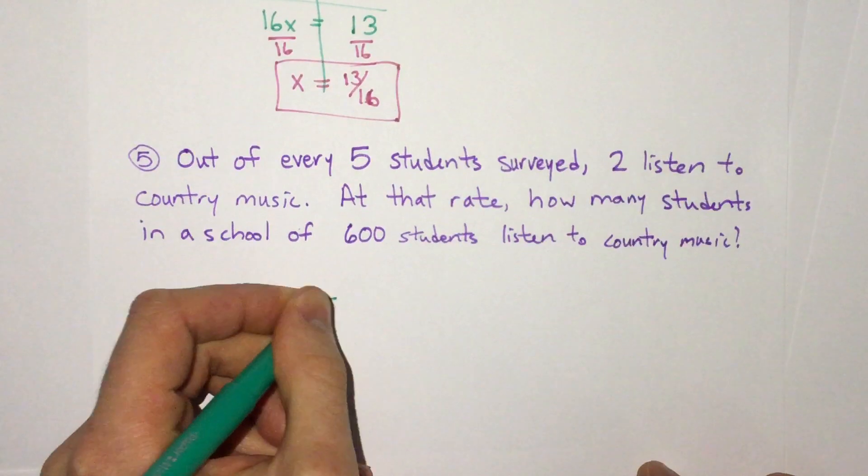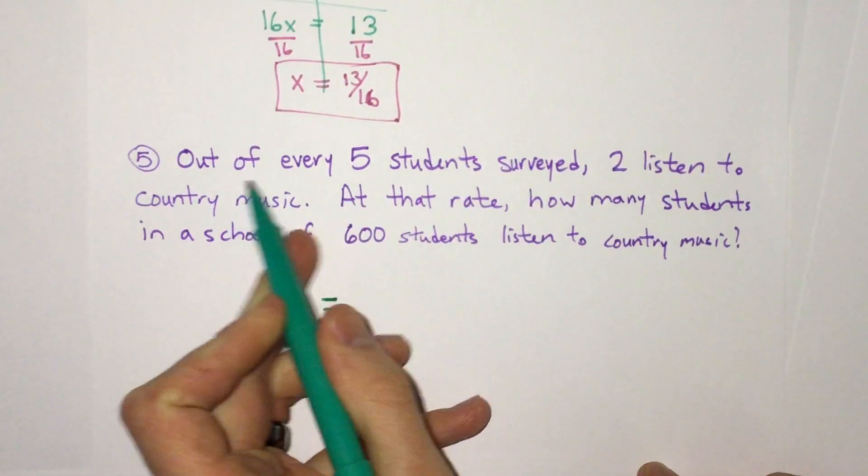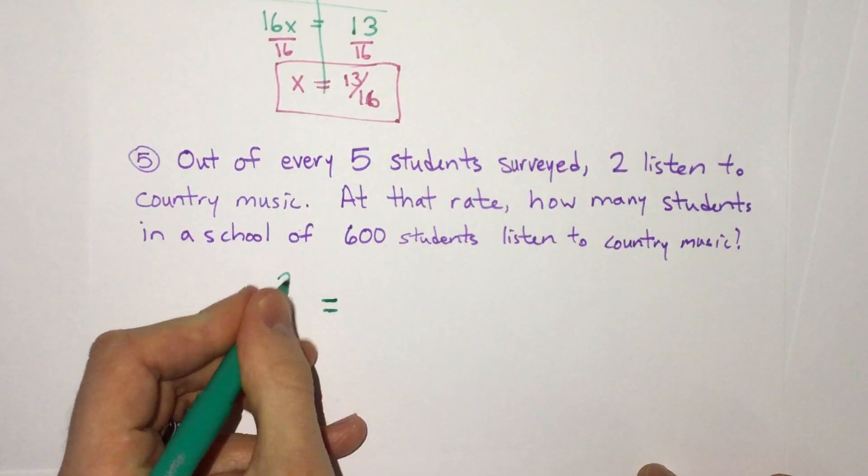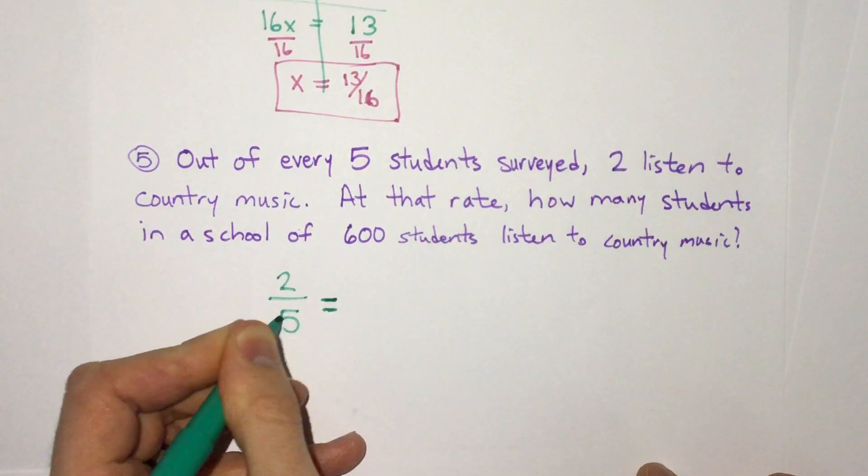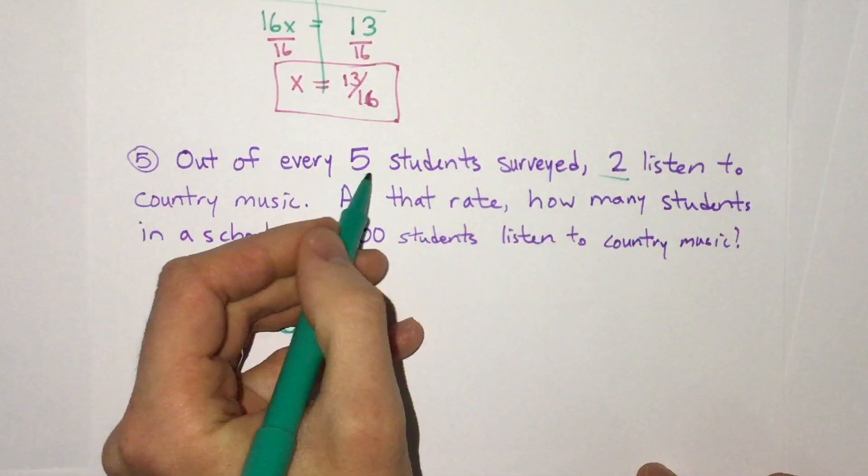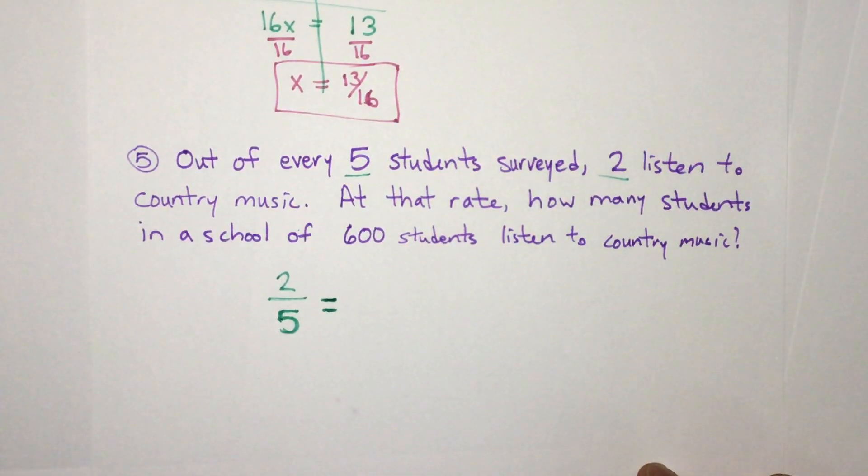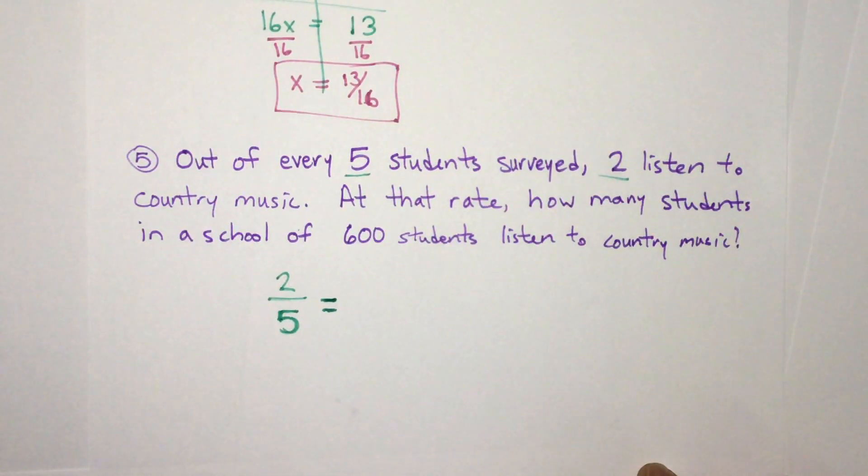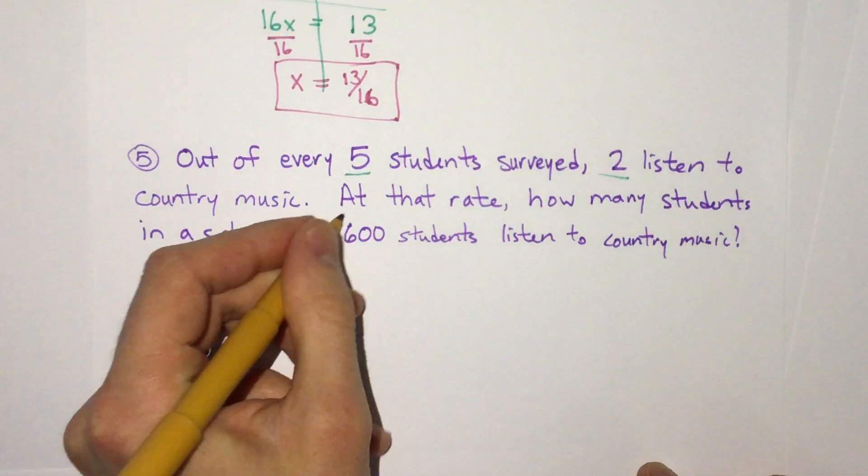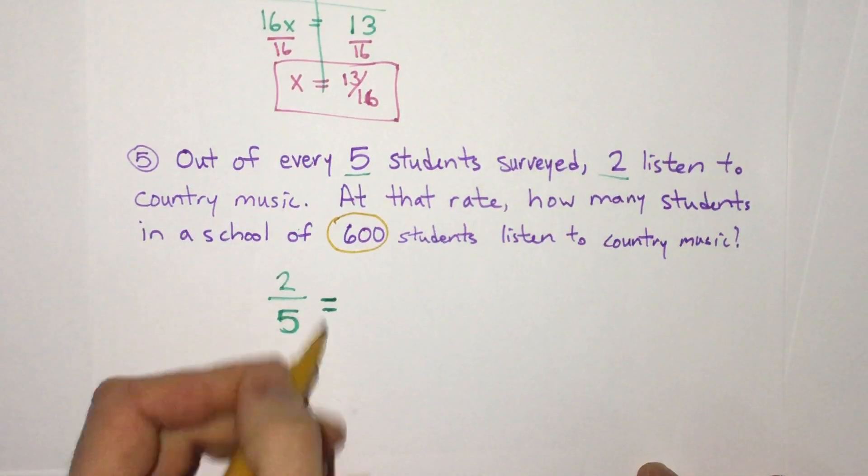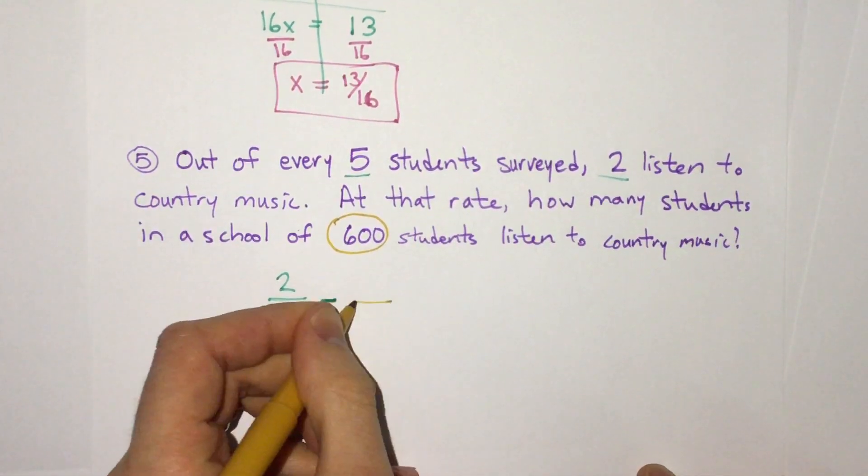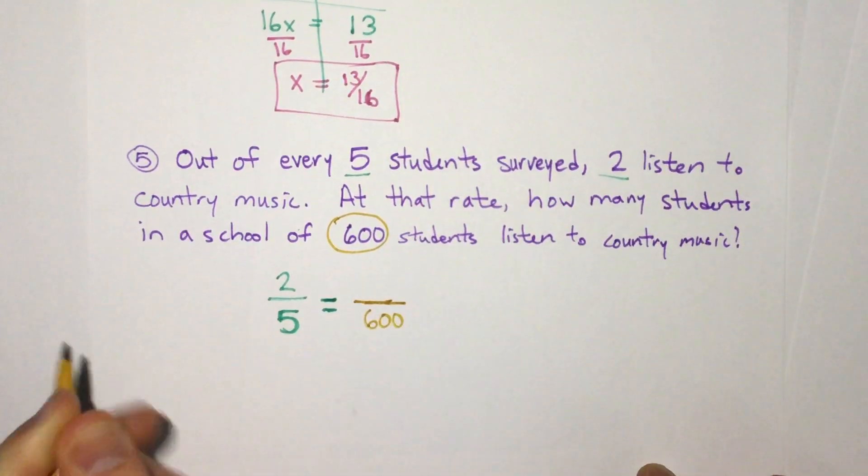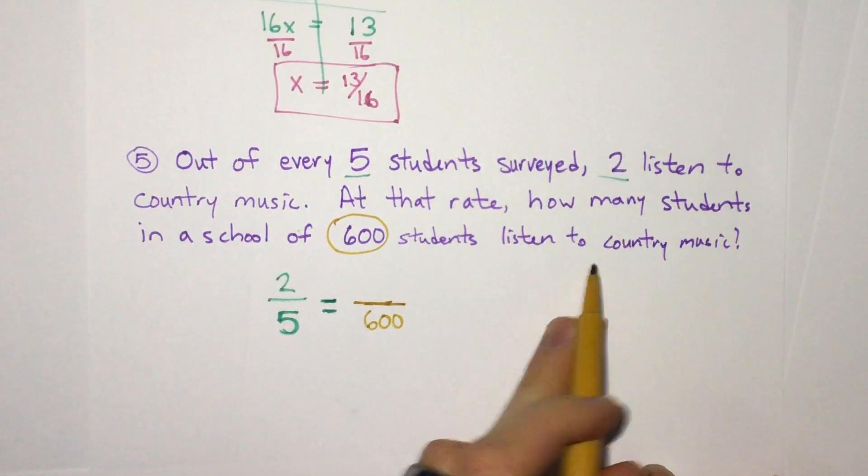So we know we're setting up a proportion. And we're told, out of every five students, two listen to country music. So we can say, two out of five listen to country music. We get that two listen out of every five surveyed. Then it's asking us, how many students out of 600 students listen to country music? Well, 600 students is our total. And remember, five was our total number, two out of every five. So we're going to put the 600 also at the bottom.